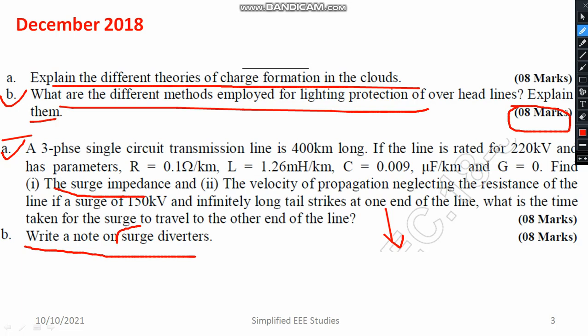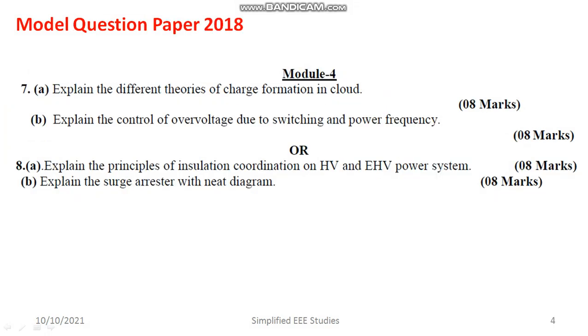Write a note on surge diverters — it carries 8 marks. You have to elaborate different methods, mentioning some points on surge diverters. For question 1B, also having 8 marks, you have to explain in detail about surge diverters: what is a surge diverter, how does it work, what is the circuit diagram, if you are having a schematic diagram do mention it, and do mention the applications. What are the construction details of surge diverters? If you mention very clearly definitely you will be getting 8 out of 8.